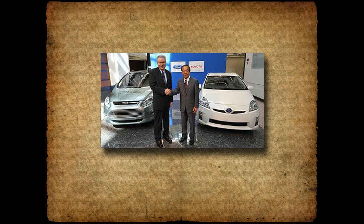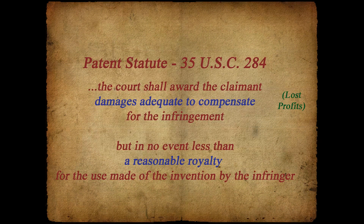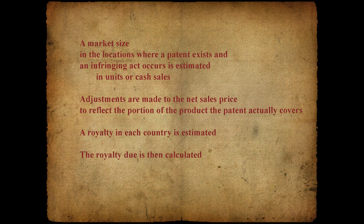This presentation looks at the stick licensing approach — what a court might award an infringer in a particular situation. Let's look at an example done in a spreadsheet. The form and details of the spreadsheet may vary, but some version of these components will exist. A market size in locations where a patent exists and an infringing act occurs is estimated in units or cash sales. Adjustments are made to the net sales price to reflect the portion of the product the patent actually covers. A royalty is estimated and the royalty due is calculated.